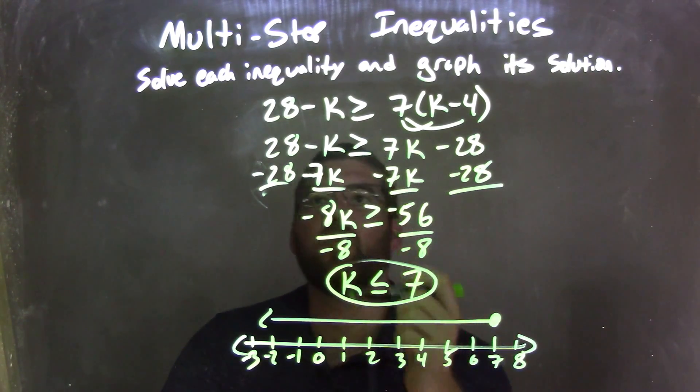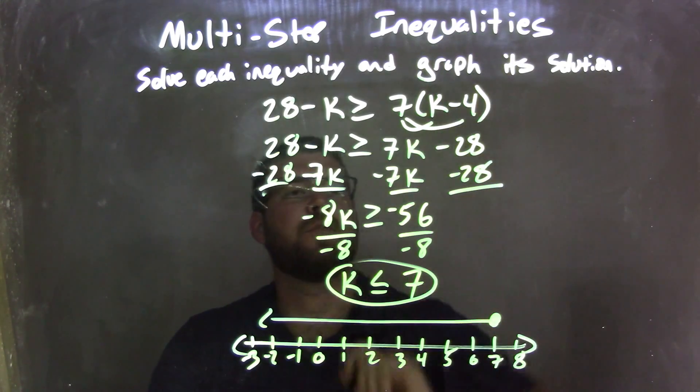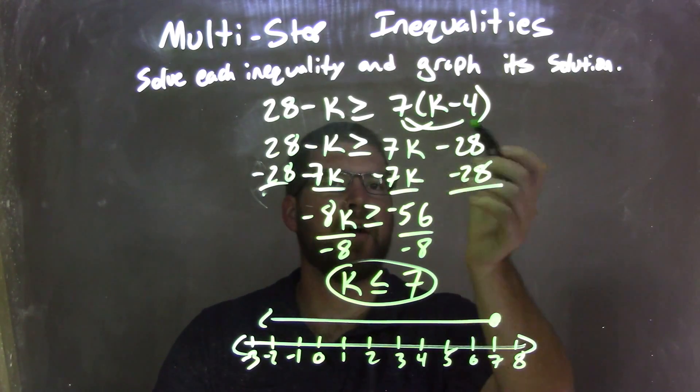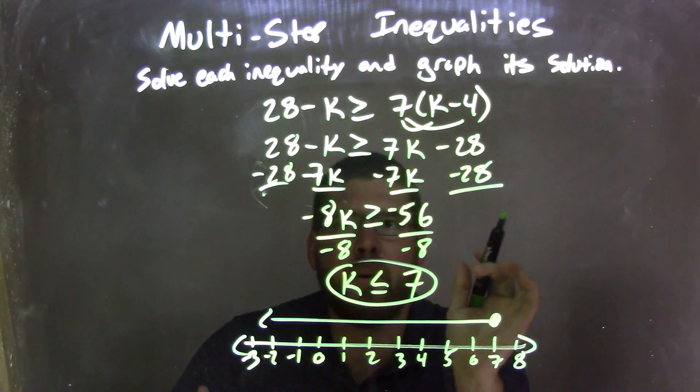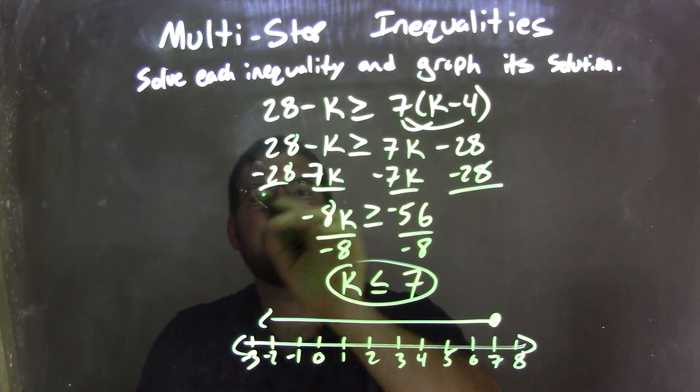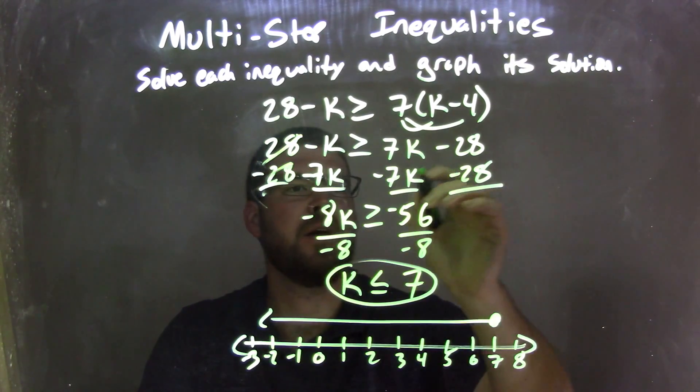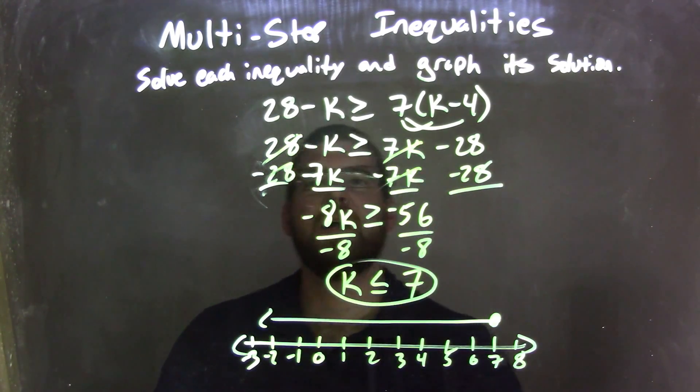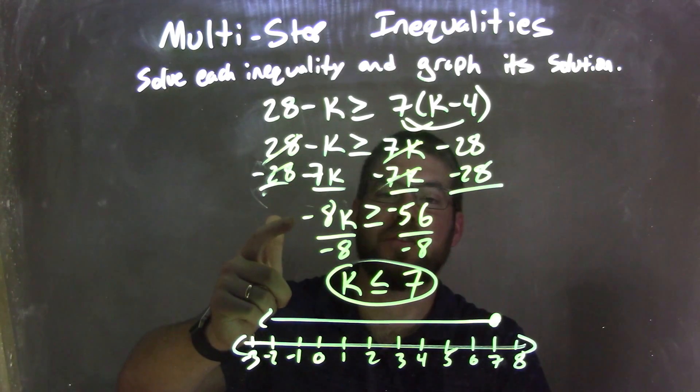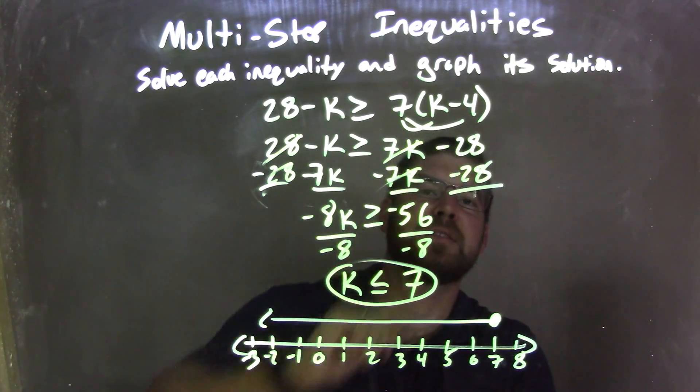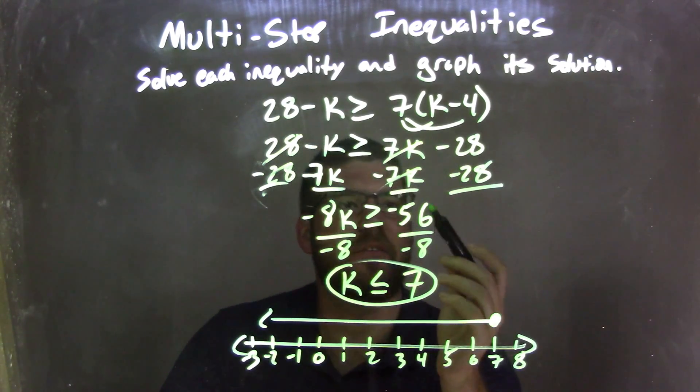Let's recap. We're given 28 minus k is greater than or equal to 7(k minus 4). I distributed the 7 across to give me 7k minus 28. Then I brought my like terms together by subtracting 28 and 7k to both sides. Negative k minus 7k is negative 8k, and negative 28 minus 28 is negative 56.